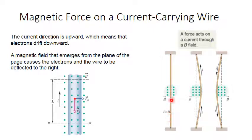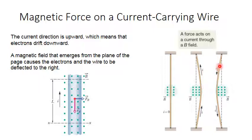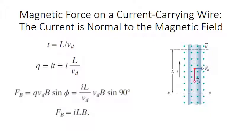If a wire carries no current — current equals zero — inside a magnetic field, there is no force on it. Now, if the wire carries a current going from bottom to top, the drift velocity of the electrons is from top to bottom, and there will be a force to the right, so the wire bends to the right. If the current is in the opposite direction — from top to bottom — the electron drift velocity is from bottom to top, and the force will be in the opposite direction, toward the left.